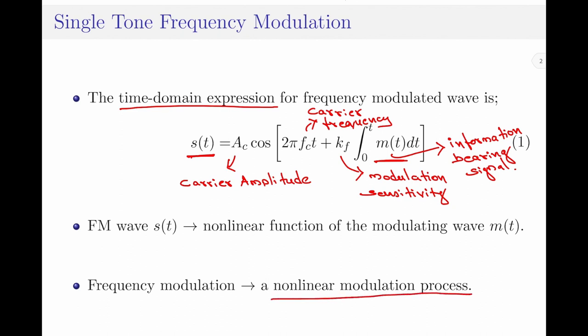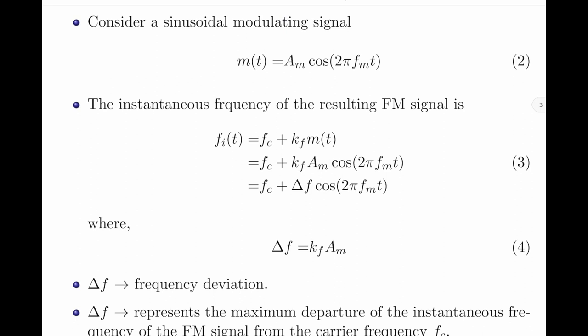This is a very important point to note. Because of this particular property of frequency modulation, drawing the spectrum for a frequency modulated wave is highly complex, unlike drawing the same for an amplitude modulated wave. Let us now consider a sinusoidal modulating signal m(t) which is of the form am into cos(2π·fm·t), where am represents the amplitude of the modulating signal and fm represents the frequency of the modulating signal.